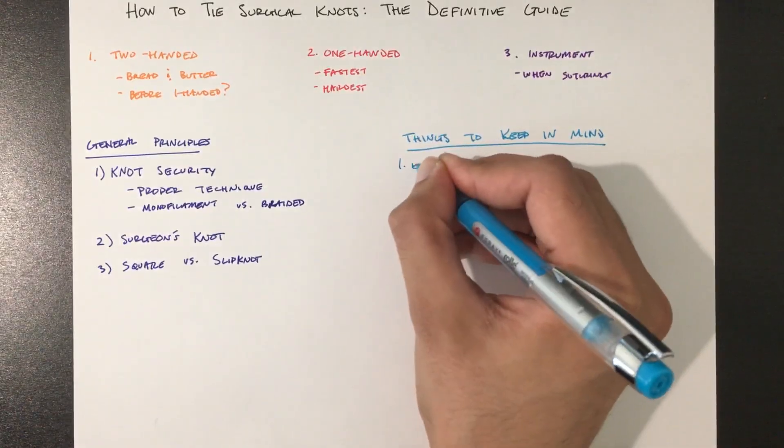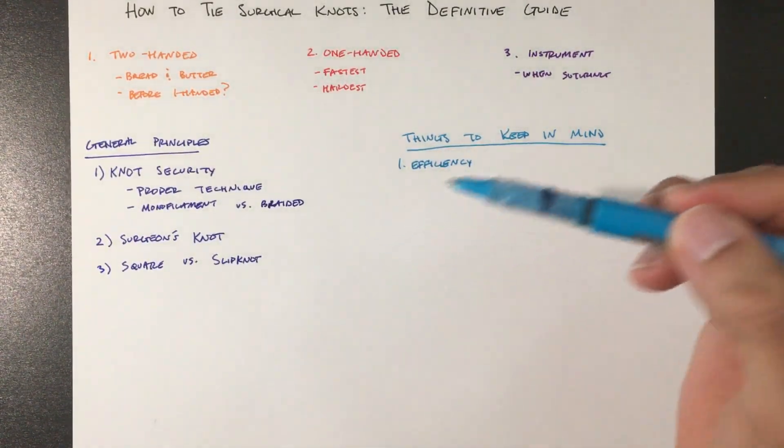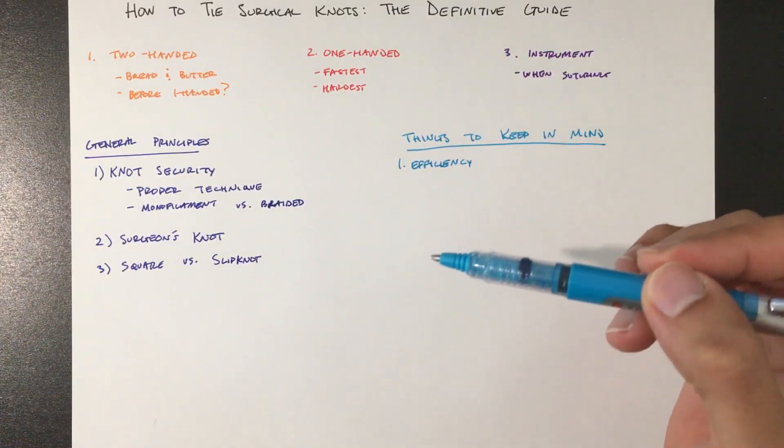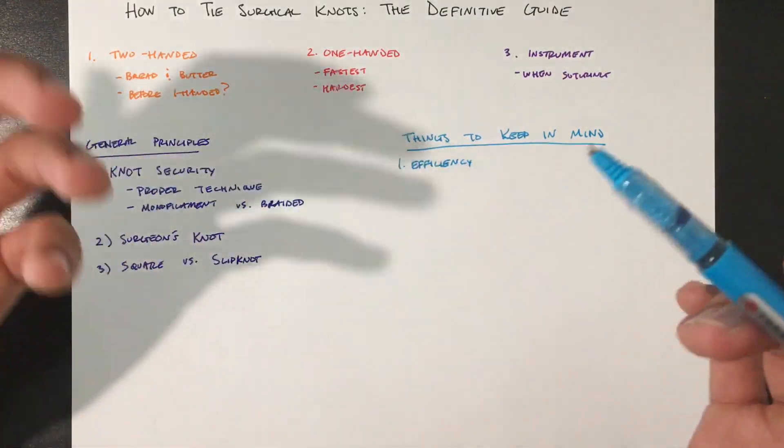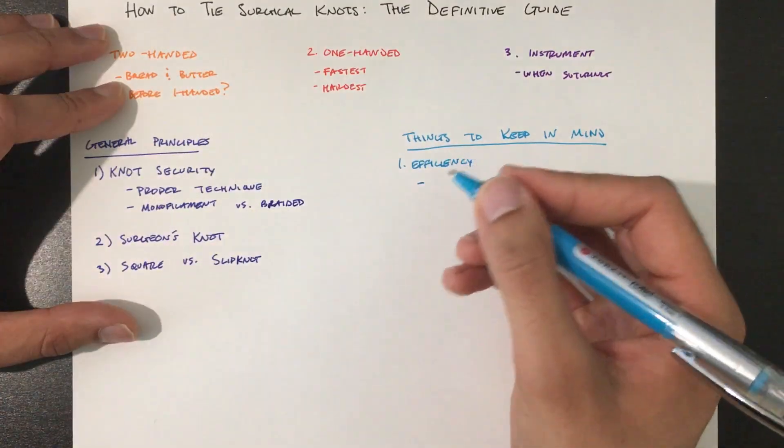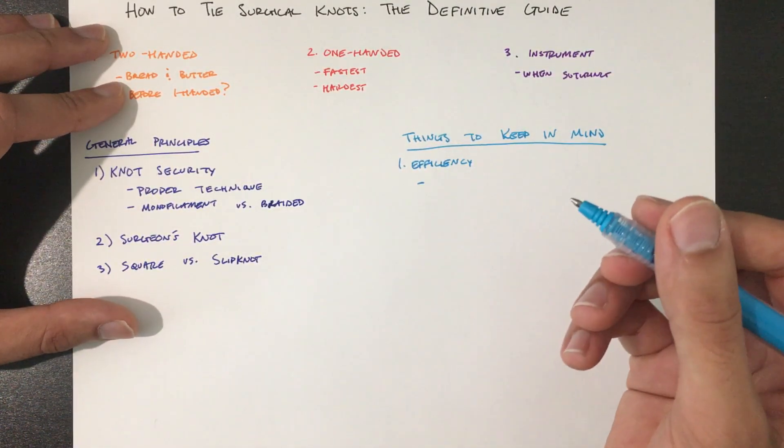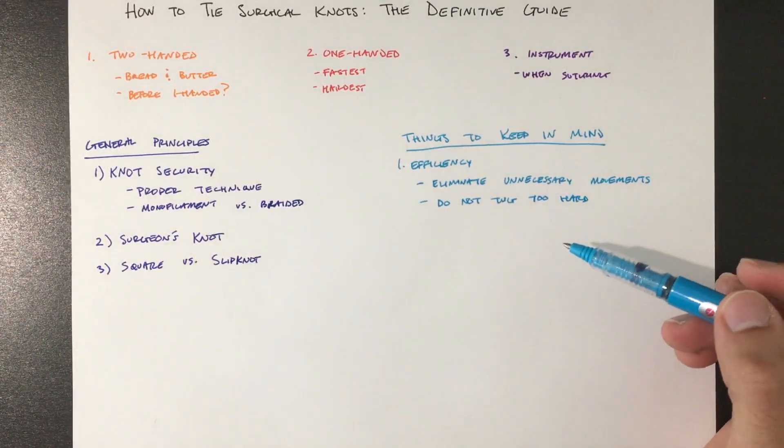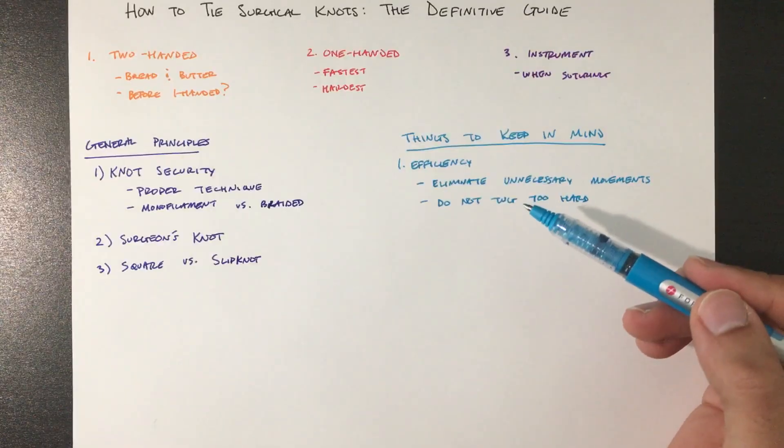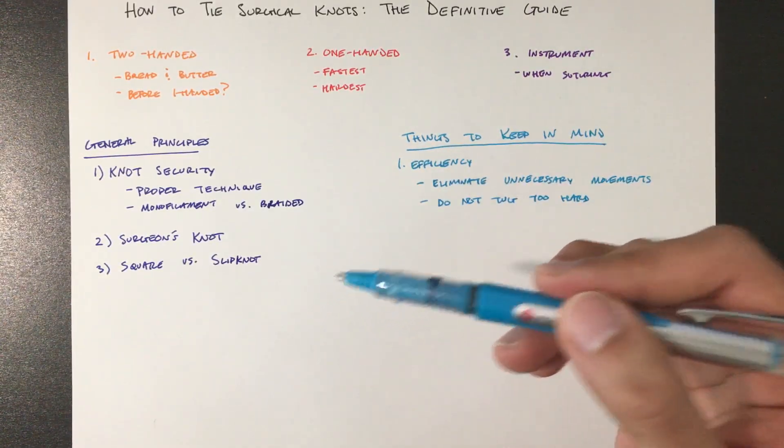So things to keep in mind. First is efficiency. Efficiency is the name of the game of the OR. All of your movements should be deliberate and intentional. Tying a one-handed knot while moving your post defeats the purpose. So once you get the hang of tying, focus on eliminating unnecessary movements and not tugging too hard. If you're tying over a delicate vessel, you need to be able to tie a knot securely without actually pulling on the vessel and damaging it.